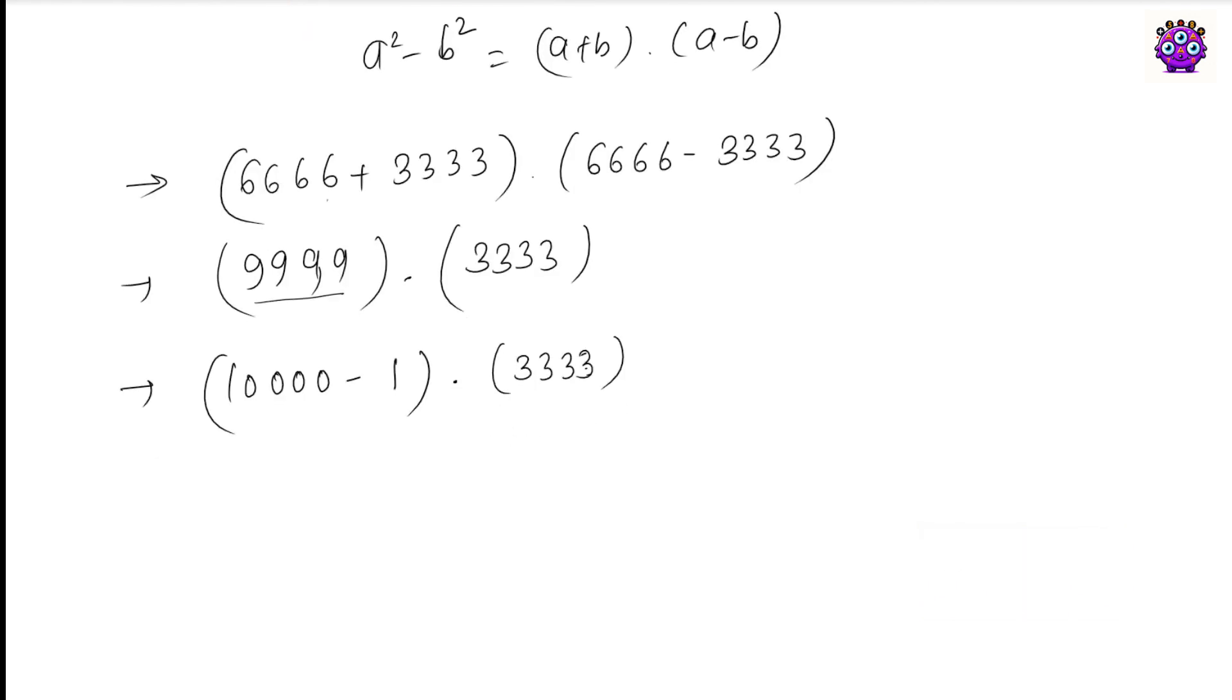Now let's multiply 3333 to this term, 10000 minus 1. It will become 33330000 minus 3333.